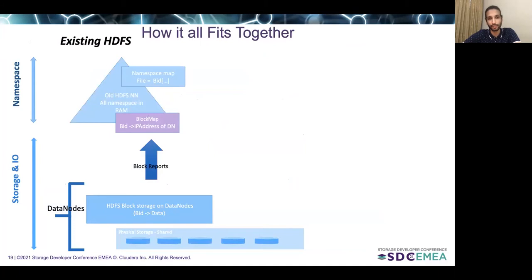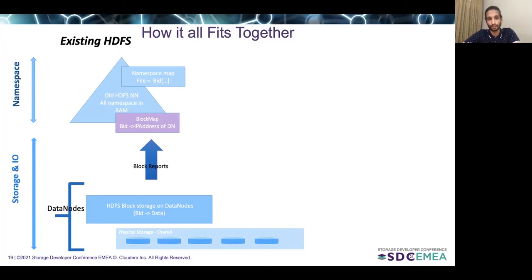Let's dive a bit deeper into the HDFS architecture, and then we'll see some of the improvements which Ozone makes that help it achieve the scale of 10 billion keys. In HDFS, the namespace is entirely kept in RAM, and the namespace consists of a namespace map as well as a block map. The namespace map maps a file to a list of blocks which in total comprise the file. The block map maps a block to the set of data nodes which hold the replica for that block. The resource utilization is on the order of the number of files and number of blocks in the HDFS cluster.